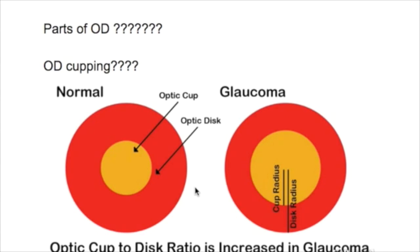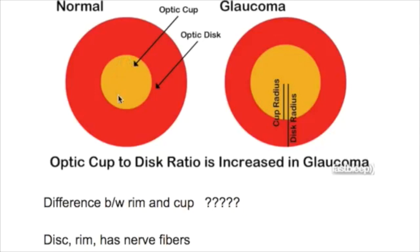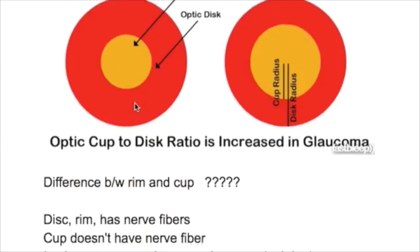What are the parts of the optic disc and what is optic disc cupping? The two parts are the optic cup and the optic disc. The cup is in the center. The optic cup does not have nerve fibers in it, whereas the optic rim has nerve fibers — the neuroretinal tissue.